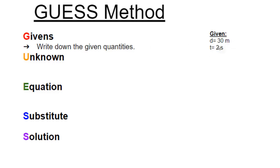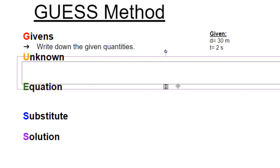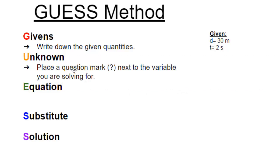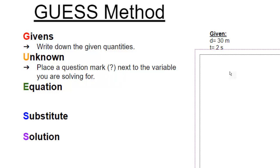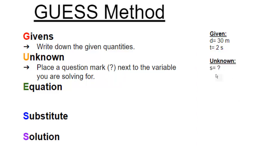The Givens are almost always numbers — they're the numbers in the problem given to you. You write them down and label them. The Unknown is what you don't know; it's usually the question — what the problem is asking you for. Place a question mark next to the variable you're solving for. Here, we're looking for S for speed. That covers the G and the U.